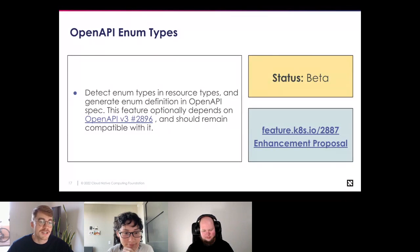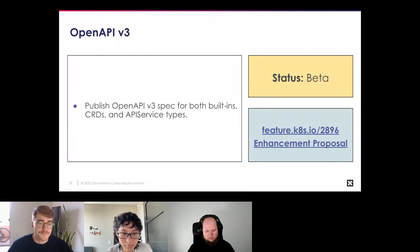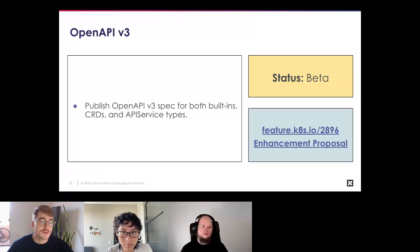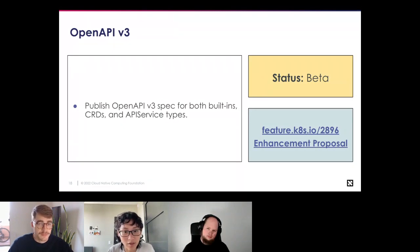OpenAPI enum types: this detects enum types in resource types and generates a definition in the OpenAPI spec. Currently types in the API have fields that are actually enums but represented as plain strings. This proposes an enum marker for type aliases, so the OpenAPI generator can recognize the marker and auto-detect possible values for an enum. OpenAPI v3 publishes the spec for both built-ins, CRDs, and API service types — though fields outside of the schema object are not included in this enhancement.